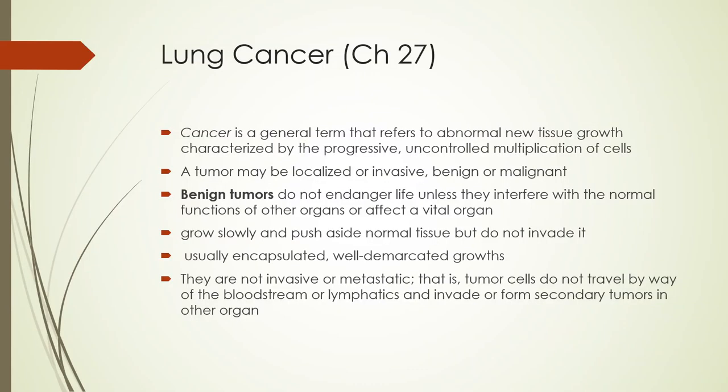Lung cancer is chapter 27 in the book. It's a general term that refers to new tissue growth — a progressive, uncontrolled multiplication of cells, just like any other type of cancer. It might be localized or invasive; it could spread, which means it could be benign or malignant.